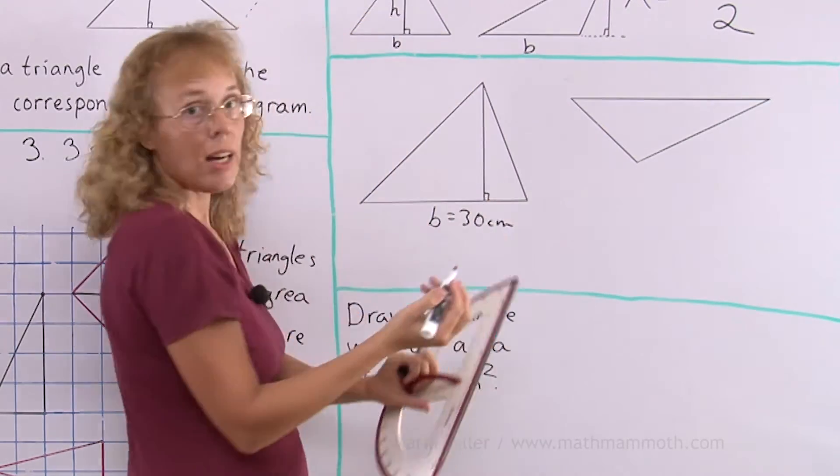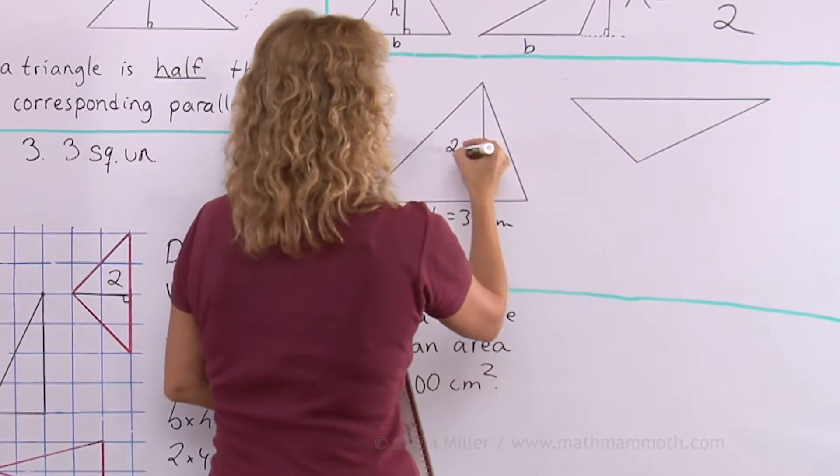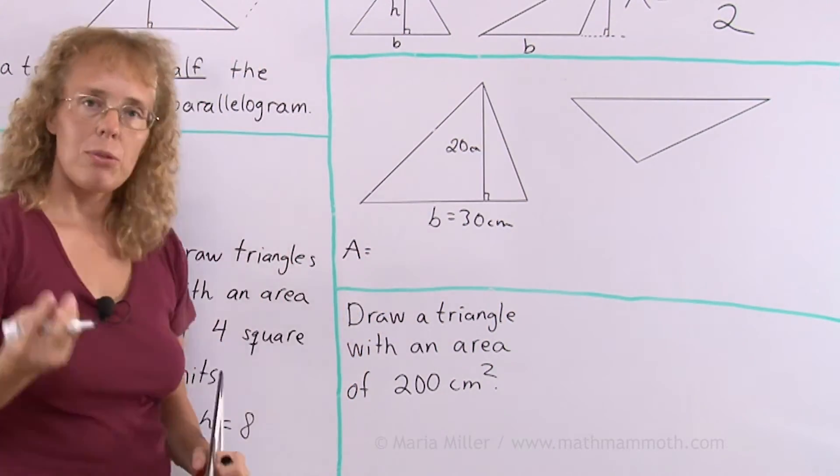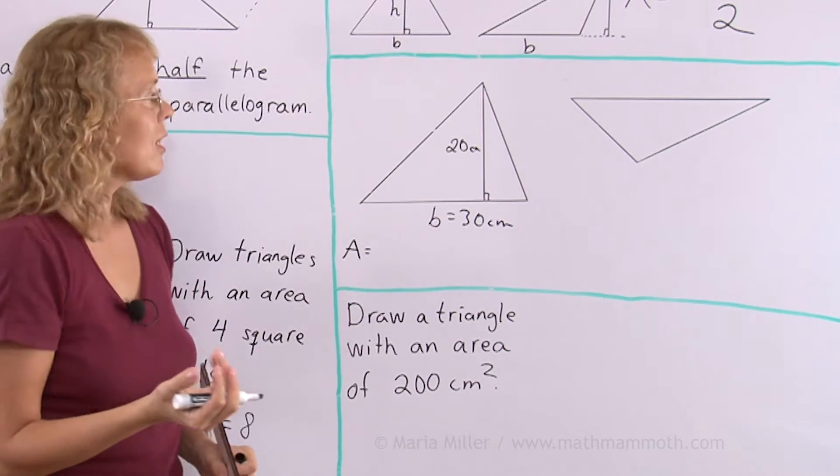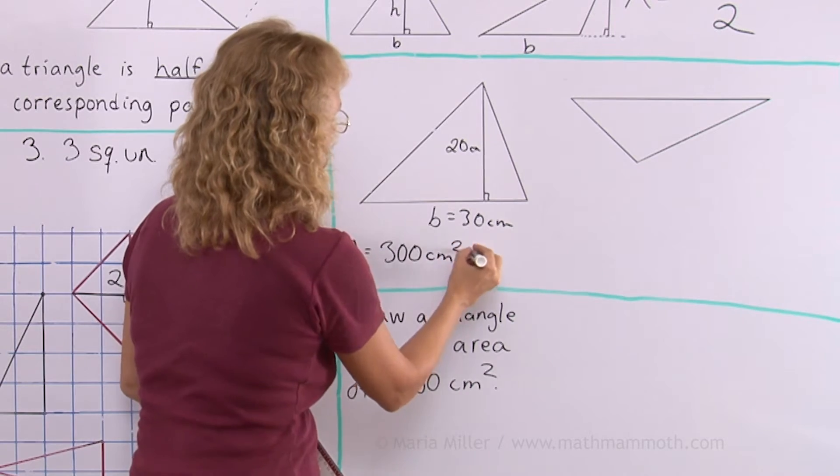There. And now I will measure how long it is. 20. Okay. So the area would be, I multiply 20 times 30, 600. Take half of that. So 300 square centimeters.